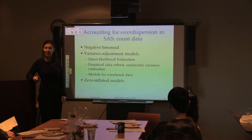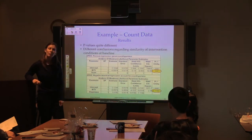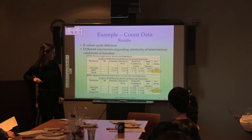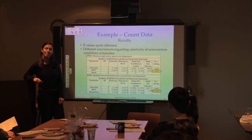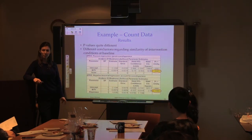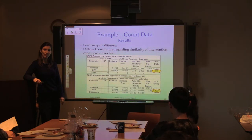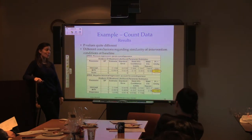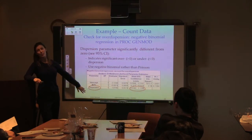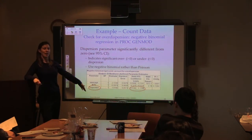An audience member asks whether the dispersion parameter looks significantly different from one rather than zero. The speaker clarifies that in SAS, the dispersion parameter is tested against zero, and explains this will be covered in detail when discussing negative binomial regression and the scale parameter in quasi-likelihood estimation.